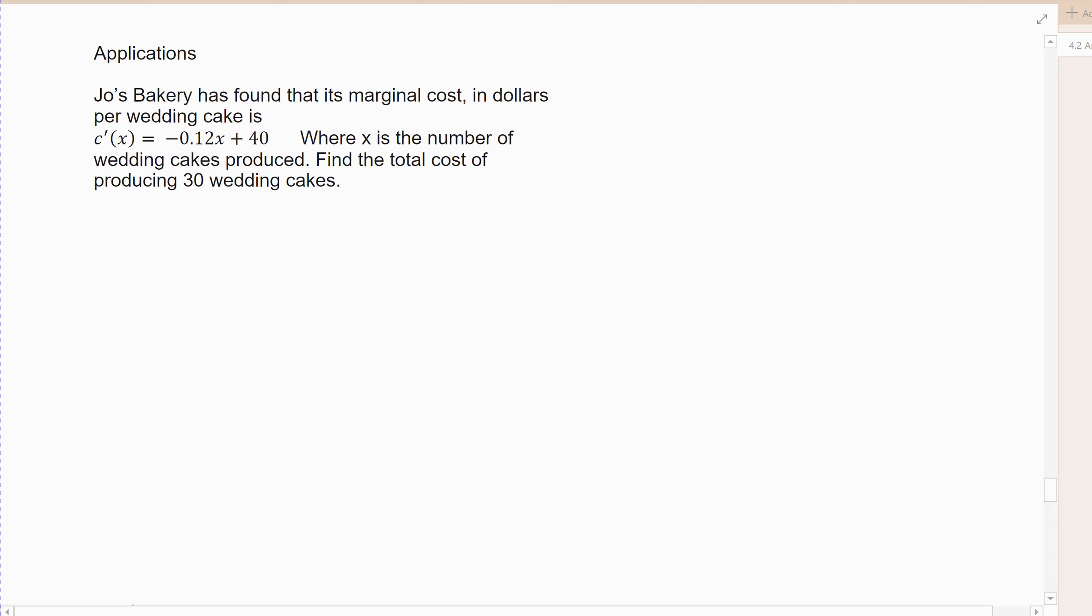All right, so the first example, suppose Joe's Bakery found that its marginal cost in dollars per wedding cake is given by that derivative, negative 0.12x plus 40, where x is the number of wedding cakes produced. Find the total cost of producing 30 wedding cakes.